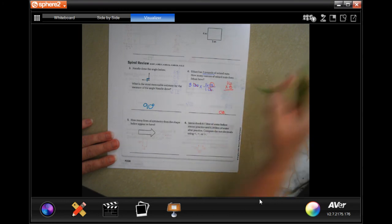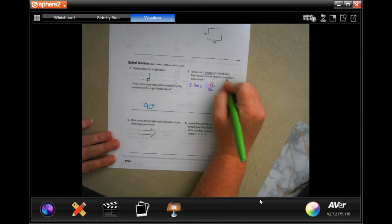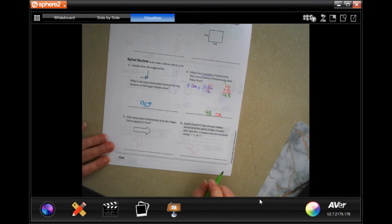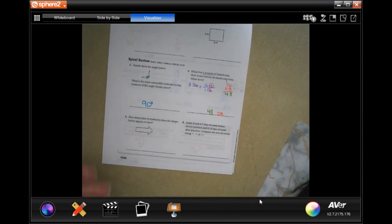Well, 3 times 6 is 18, carry the 1. 3 times 1 is 3, plus 1 is 4. 48 ounces.